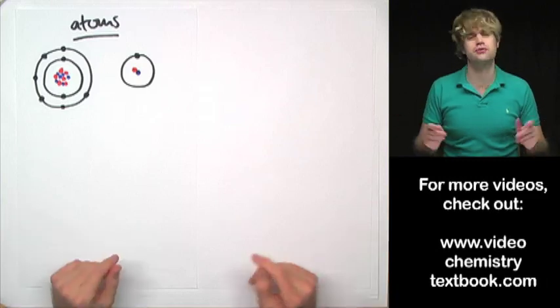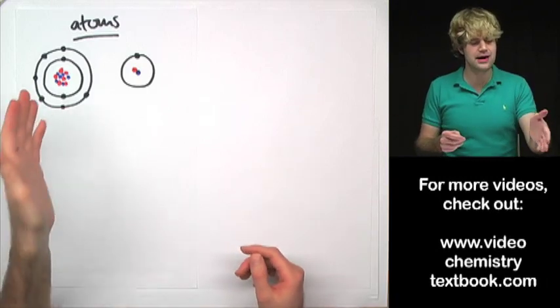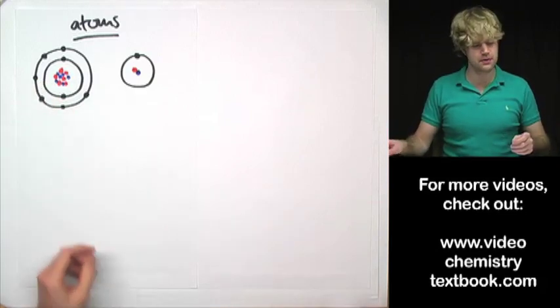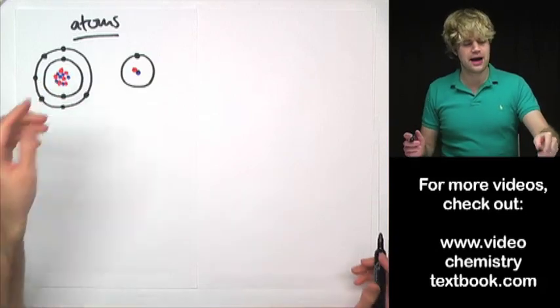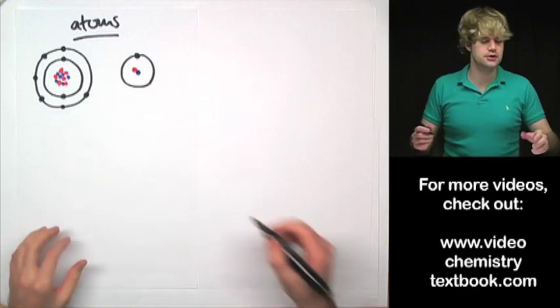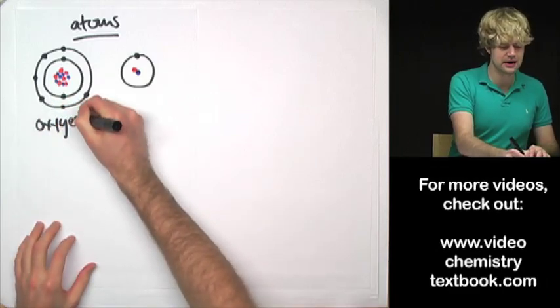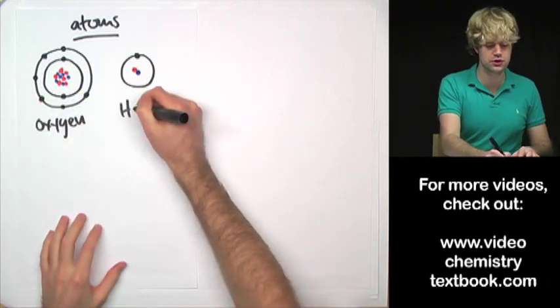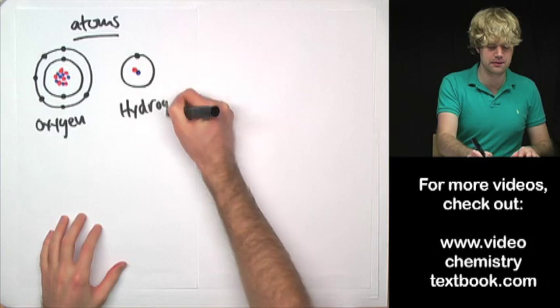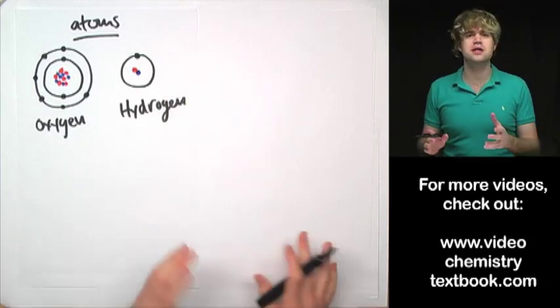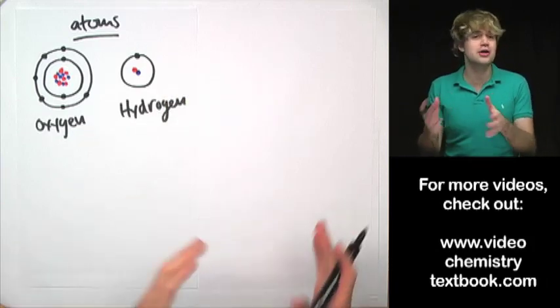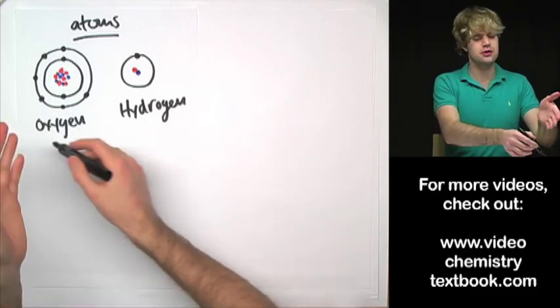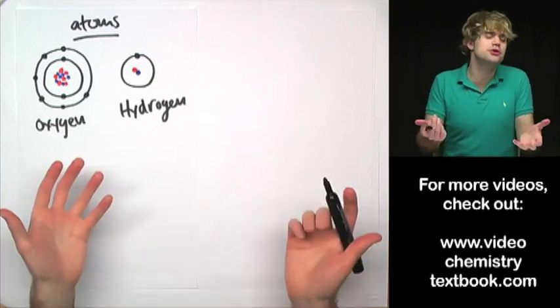So there are all sorts of different types of atoms. And the type of atom that you have depends on the number of protons in the nucleus. This atom over here has eight protons in the nucleus, which means that it is an atom of oxygen. This one over here only has one proton in the nucleus, which means that it is an atom of hydrogen. As I said, there are all different kinds of atoms, and there are actually about a hundred different kinds. And when we talk about them, it's usually easier than writing out the name every time. We use abbreviations.